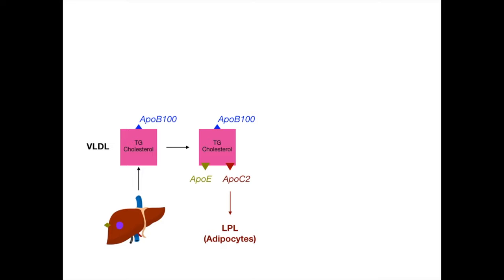Once that's happening, VLDL is going to convert into something called IDL — intermediate density lipoprotein. So we go from very low density lipoprotein, VLDL, to intermediate density lipoprotein. The naming convention reflects the changing density of these lipoproteins. IDL retains the APO-E and APO-B100 from its predecessor VLDL, and APO-C2 continues activating LPL to convert triglycerides to fatty acids. So for simplicity: VLDL turns into IDL, which now has APO-E and APO-B100 on its shell.